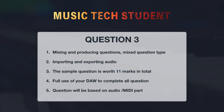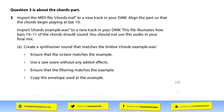Question three is all about the chord part. It asks you to import the MIDI file chord.mid to a new track in your DAW, and align the part so that the chord begins at bar 10. This is the first time you've had to align a part that doesn't start at bar 1 — they're testing your snapping and quantizing skills. This question is worth five marks, with one mark going towards making sure it's in the right place and plays back correctly.